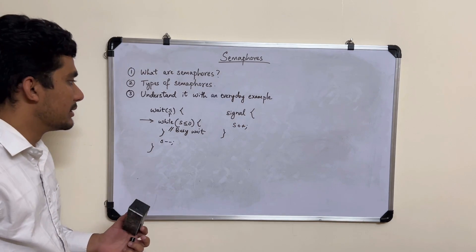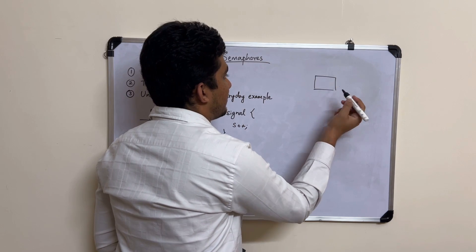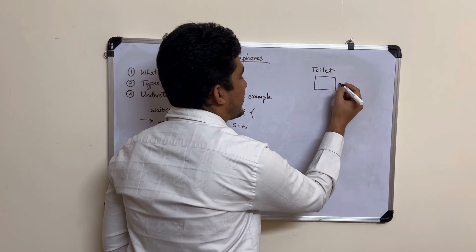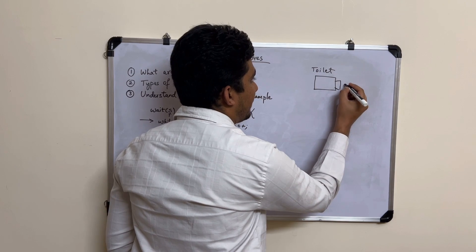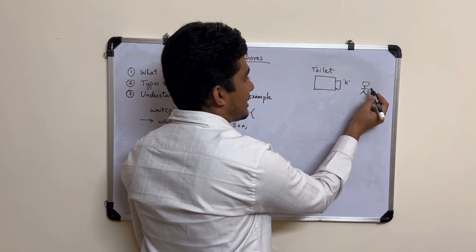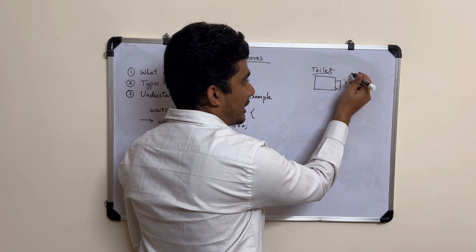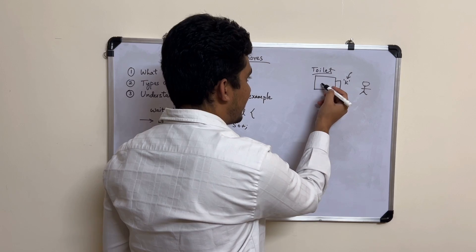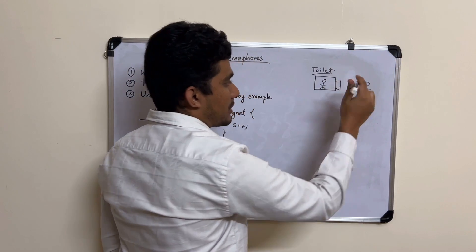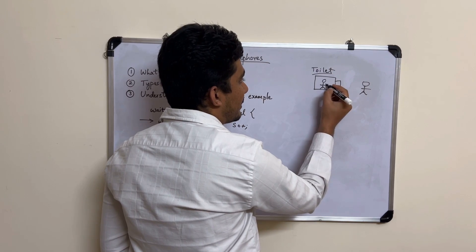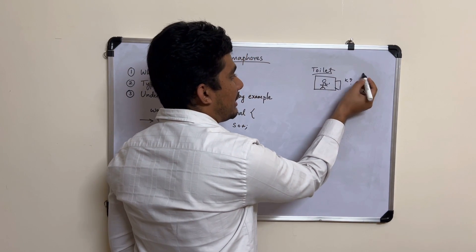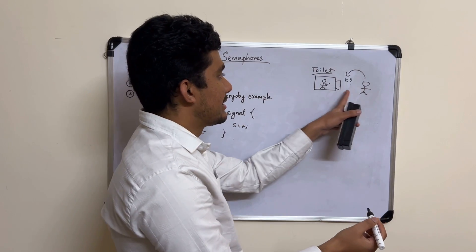To understand this better, let's use an everyday example. Imagine there is one toilet, and outside there is a door with a key. If the key is available, any person wanting to use the toilet can take the key and enter. If there is already a person inside, the key won't be available — so the next person who comes must wait because someone is already inside.